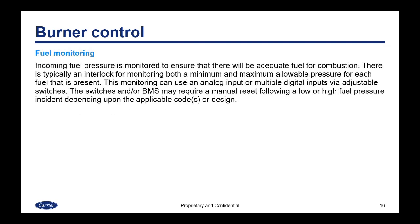Incoming fuel pressure is monitored to ensure there will be adequate fuel for combustion. There is typically an interlock for monitoring both a minimum and maximum allowable pressure for each fuel that is present. This monitoring can use an analog input or multiple digital inputs via adjustable switches. The switches and/or BMS may require a manual reset following a low or high fuel pressure incident, depending upon the applicable codes or design.